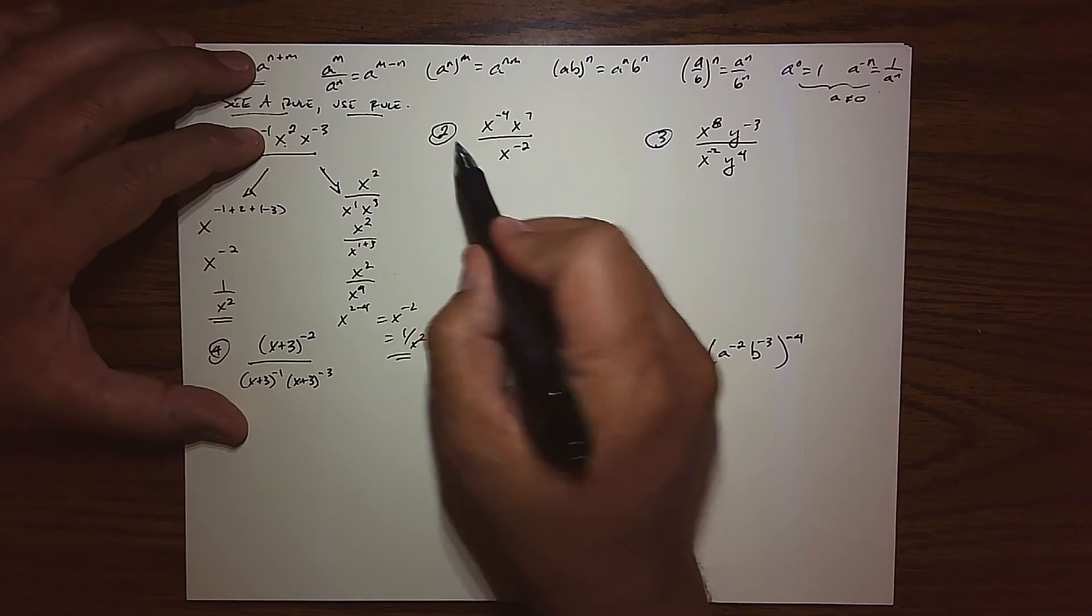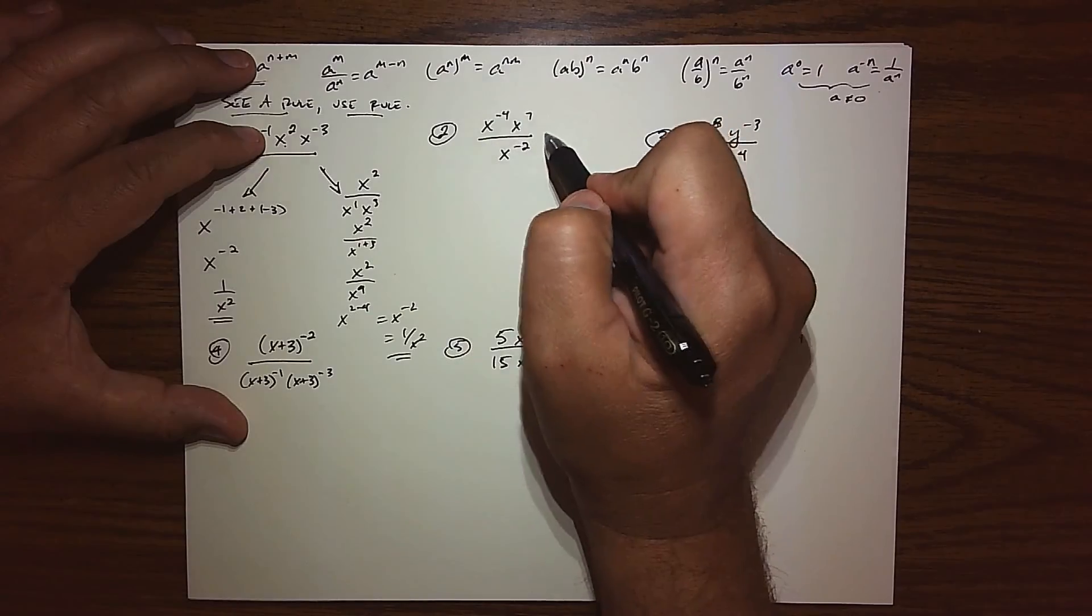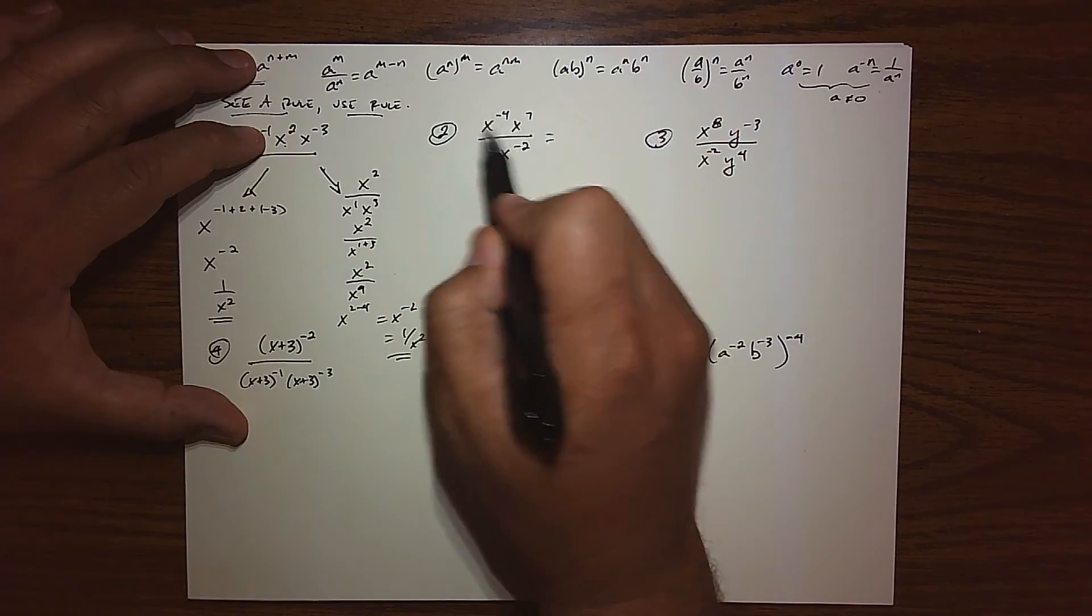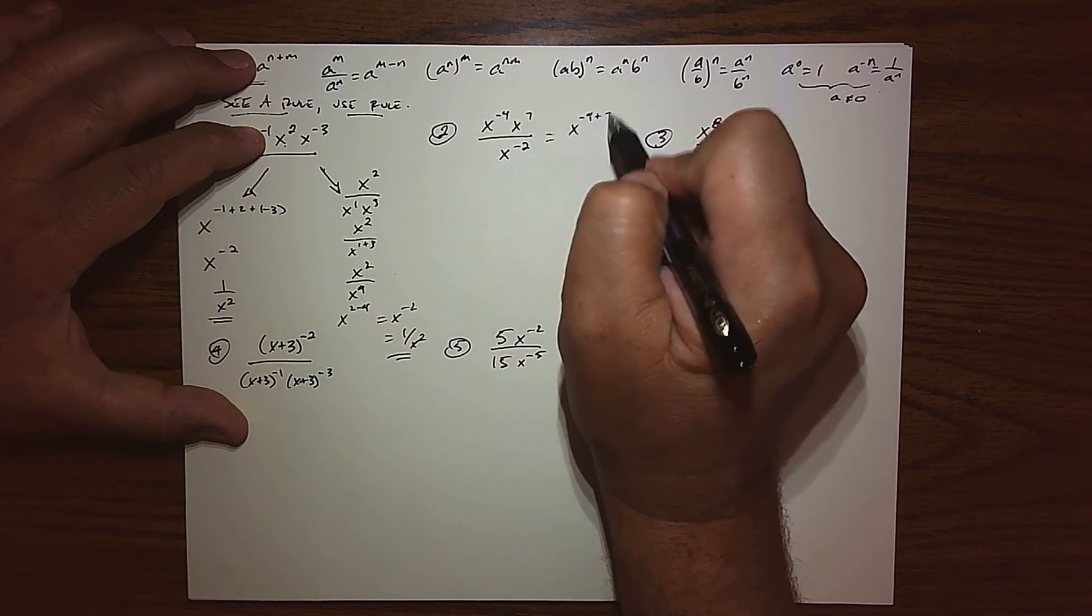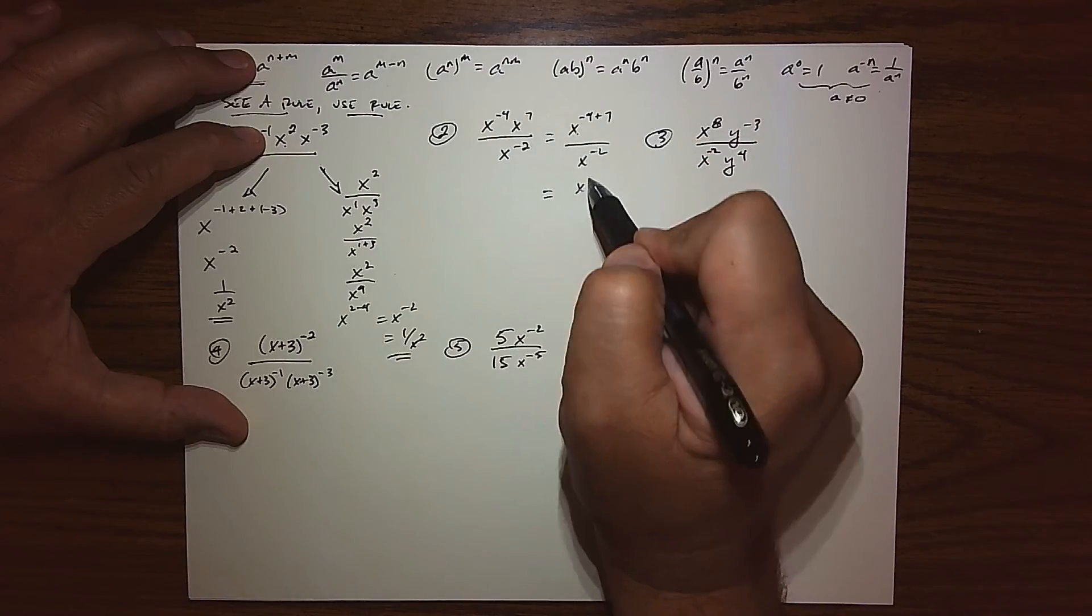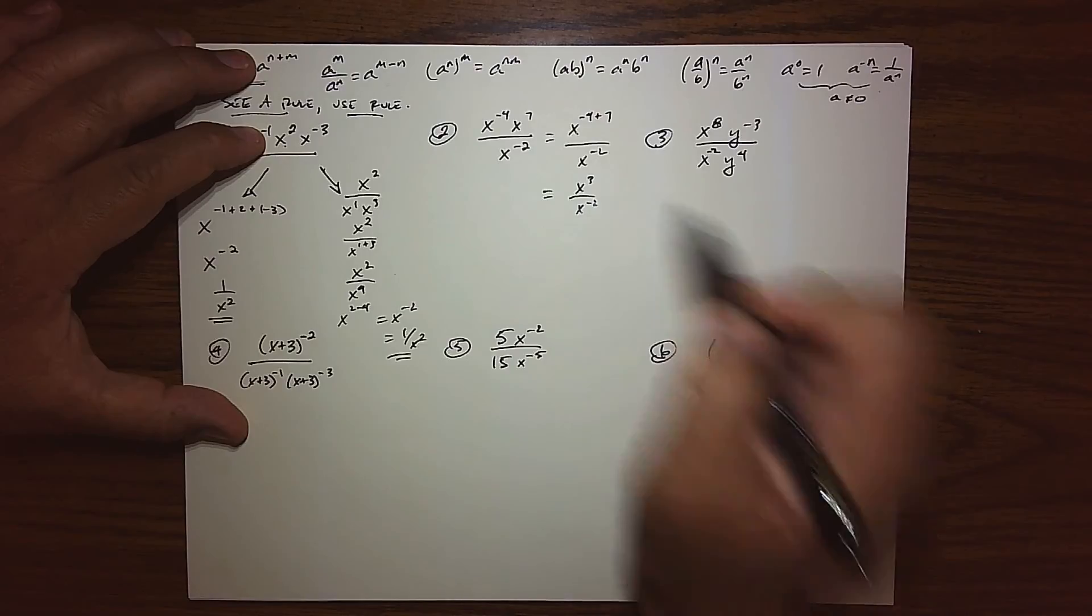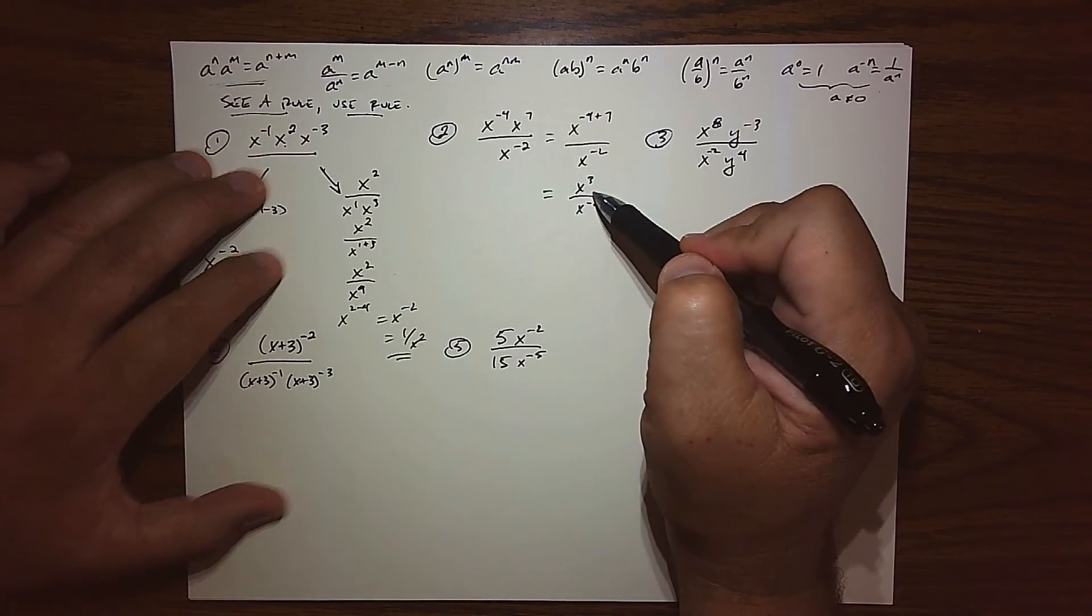So for the second one, again, we have some negative exponents around. But what I see is an opportunity to use the product rule upstairs. So when I use that, that's what I end up getting. So we end up with x to the third upstairs and x to the negative 2 downstairs.